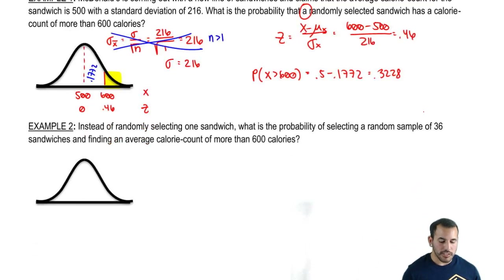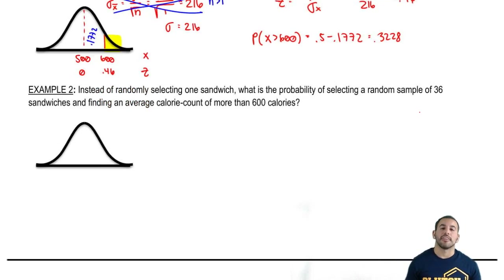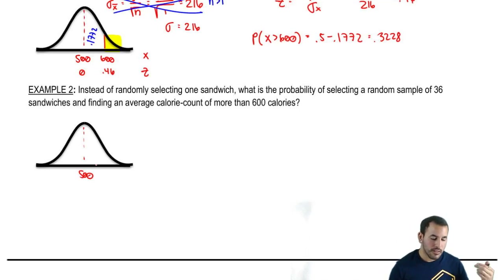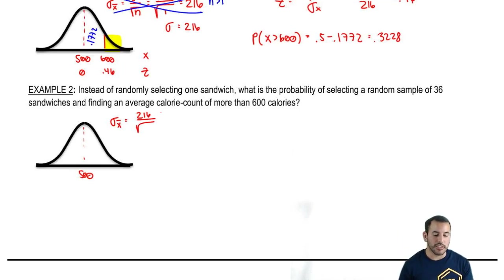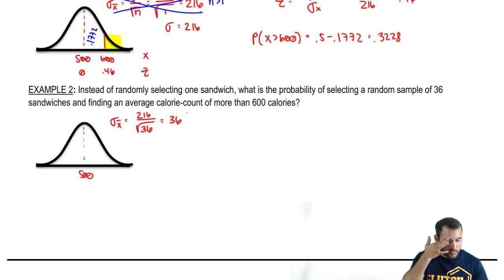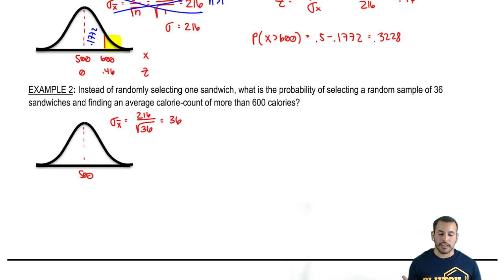Now let's move on to number two. Instead of randomly selecting one sandwich, what's the probability of selecting a random sample of 36 sandwiches and them having an average calorie count of more than 600? Our midpoint is still 500 because we're talking about the same sandwiches. We have a standard deviation of 216, but this time we're working with a sample, so let's get our standard error: 216 over the square root of 36, which gives us 36. So our new measure of spread is 36, with a mean of 500.